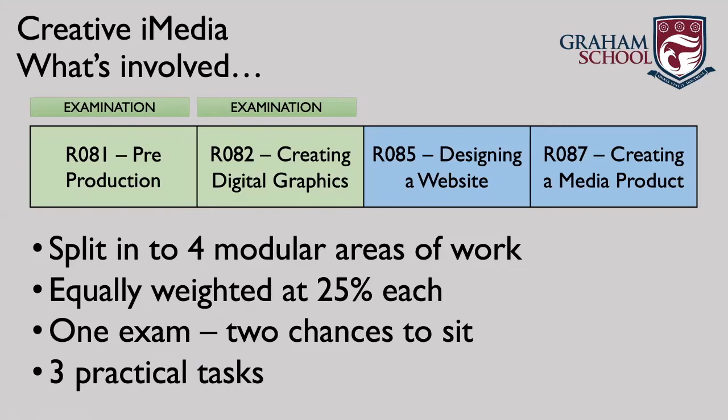There are two compulsory units shown in green on screen. RO81 is Pre-Production and is the examination unit — you study pre-production materials, planning, designing and evaluating digital products such as digital graphics, videos and scripts. The practical units are RO82 (creating a digital graphic), RO85 (designing a website), and RO87 (creating a digital media product). In previous years RO82 involved designing a CD cover or DVD cover; this year's Year 10s are creating a book cover.